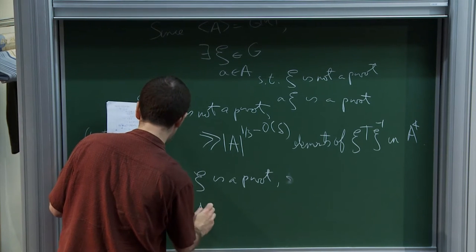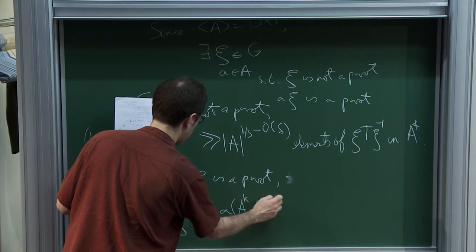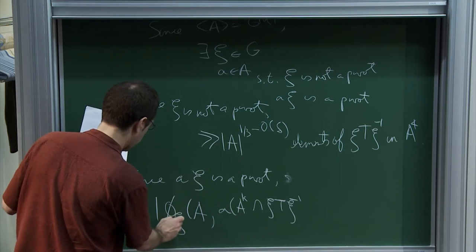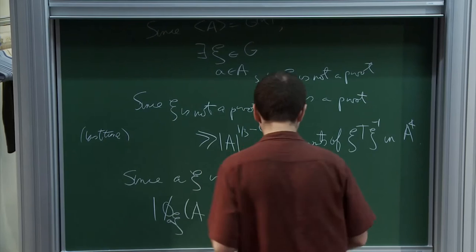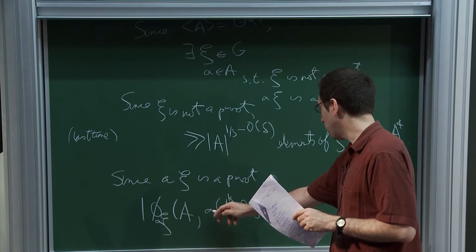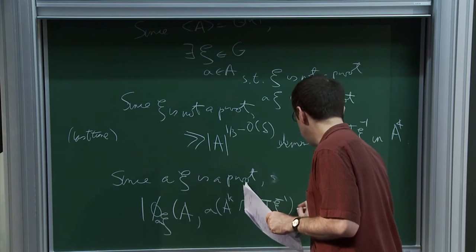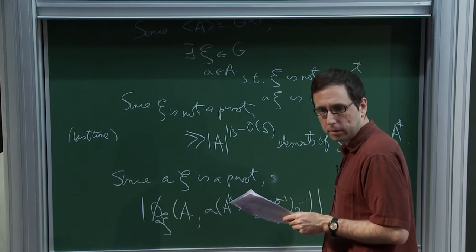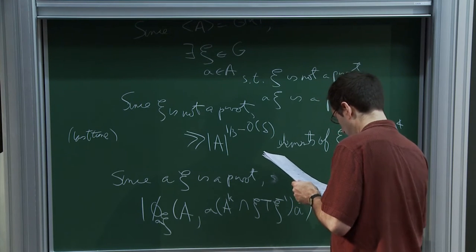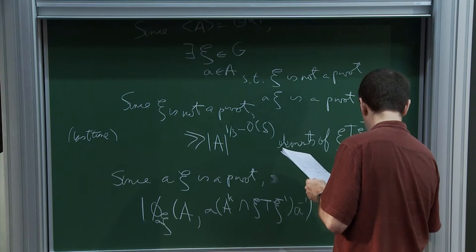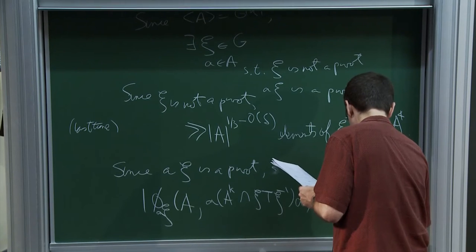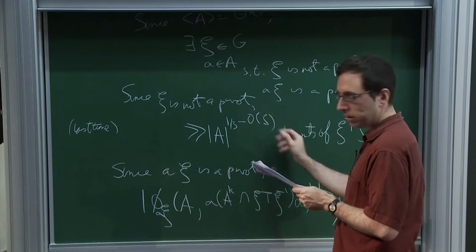As usual, we consider phi_{A·Xi}. It's going to be injective on the elements of the torus, when you have A·Xi·T·A·Xi^{-1} here, intersection with A^K. So its image is going to be at least one-fourth of A^4·Xi·T·Xi^{-1}, which is at least a constant times A^{4/3 - O(delta)}, simply by this. And so you're done.